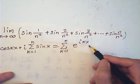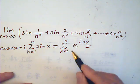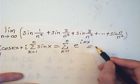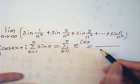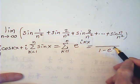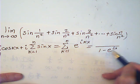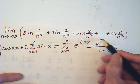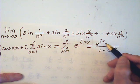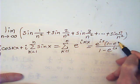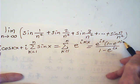This one is equal to — this is a geometric series. So this could be equal to 1 minus e to the ix, that's the common ratio, and e to the ix times 1 minus e to the nix.